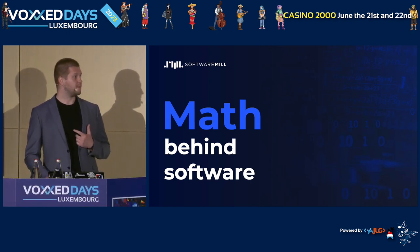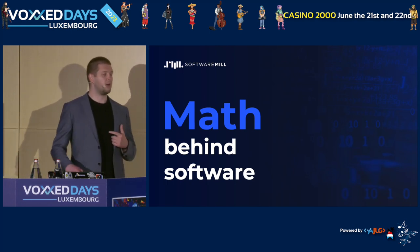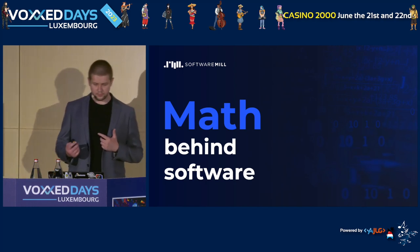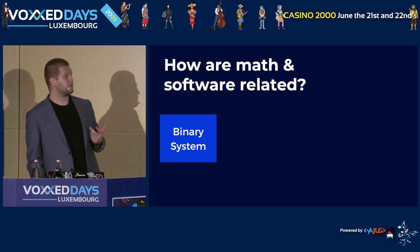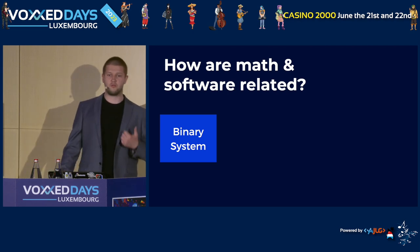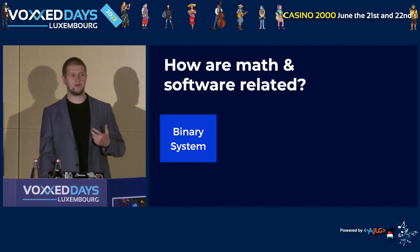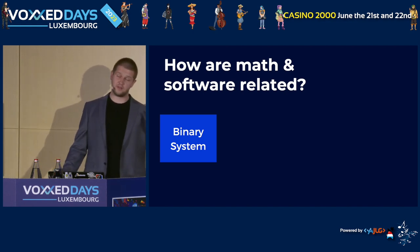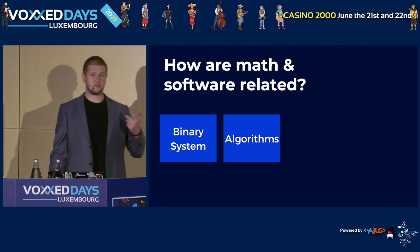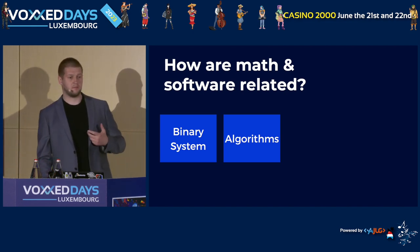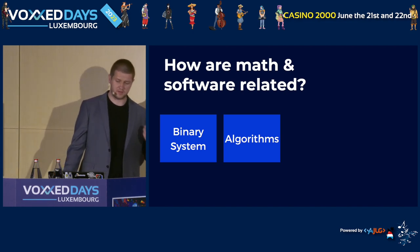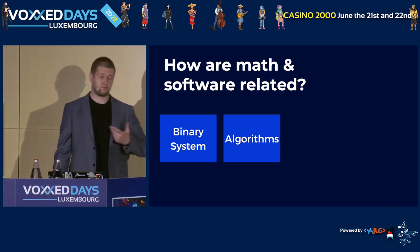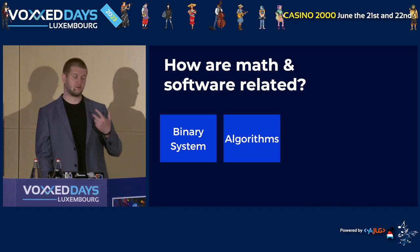Before we start, let's move to describing the levels on which math and software intersect with one another. First, we've got level zero or tier zero: the binary system — all zeros, ones, and all the algebra related to this, all the equations related to electrical engineering, which basically make our software runnable at all by providing hardware. Then we've got algorithms and data structures. Most of them have at least some mathematical foundations, especially visible in case of graph-based algorithms, which originate from mathematics as a science, not from computer science.